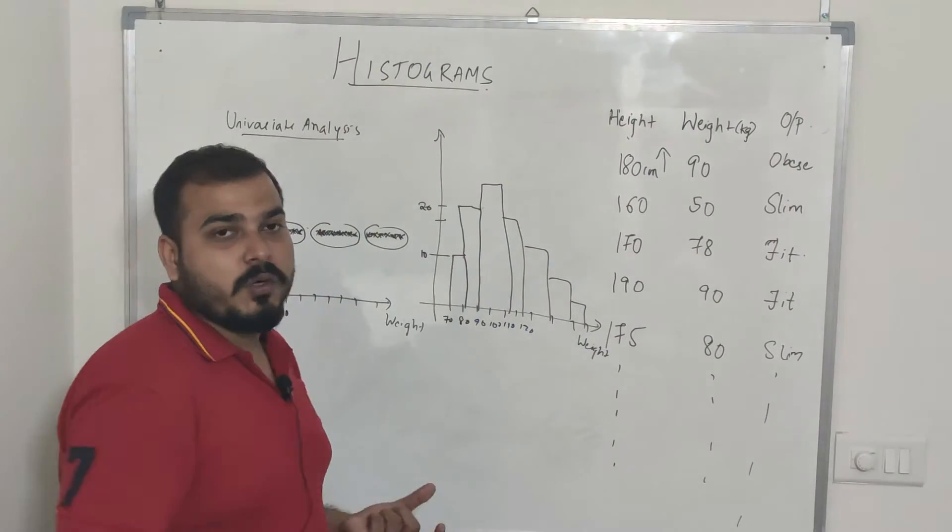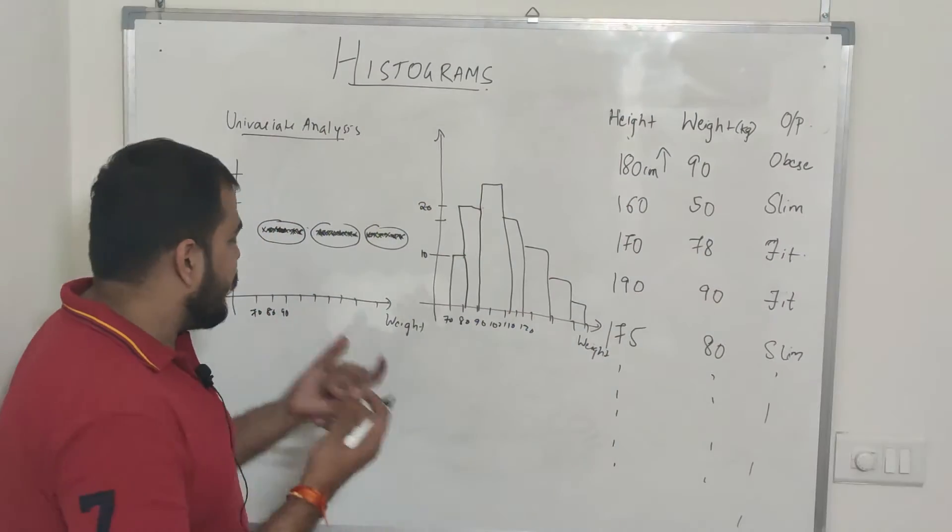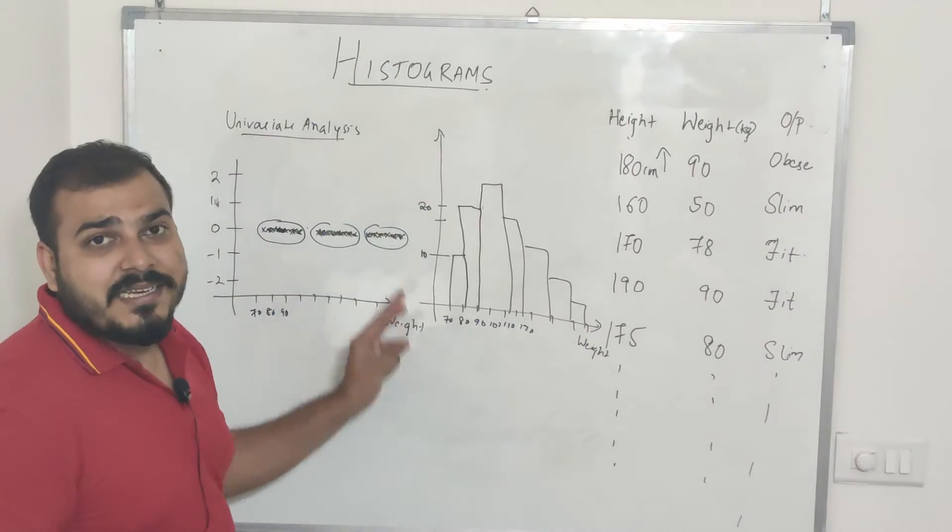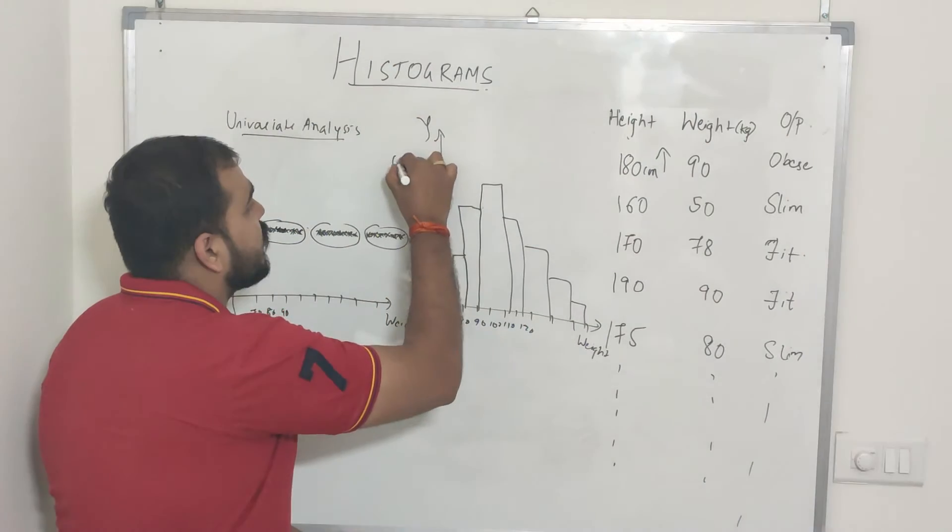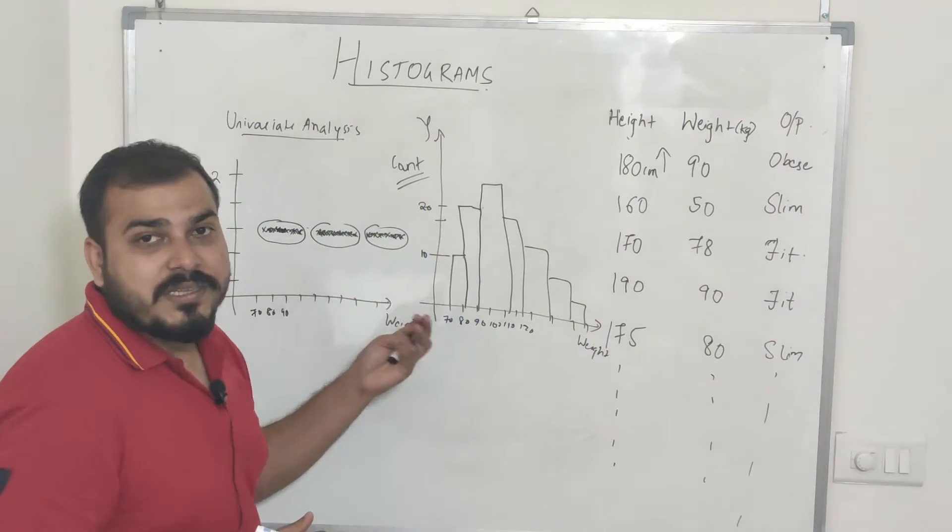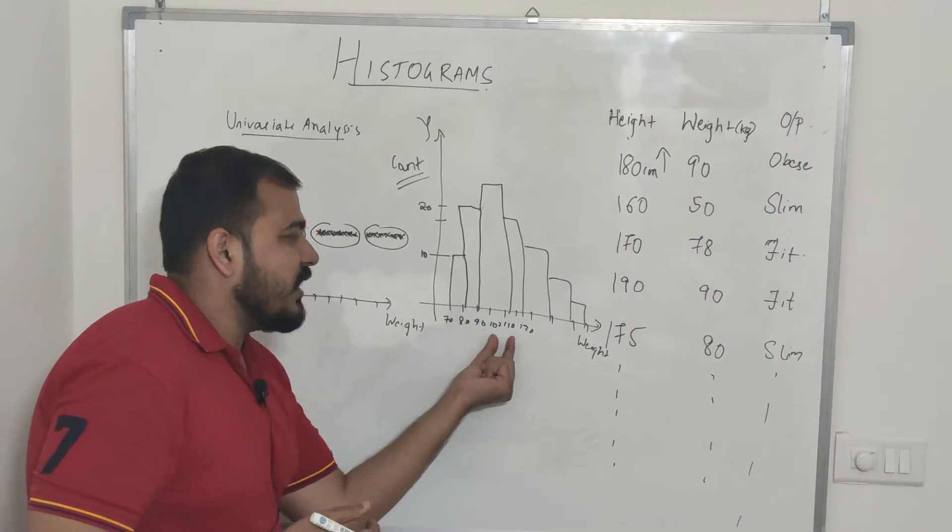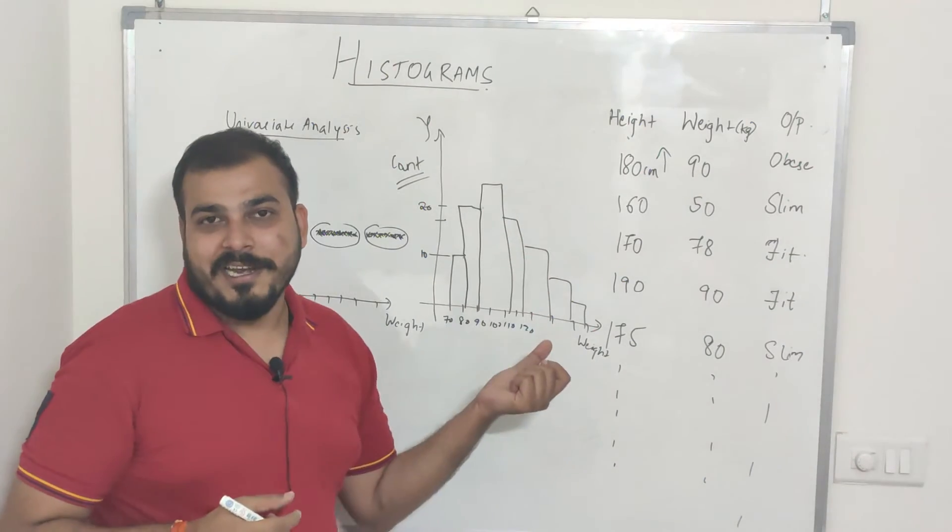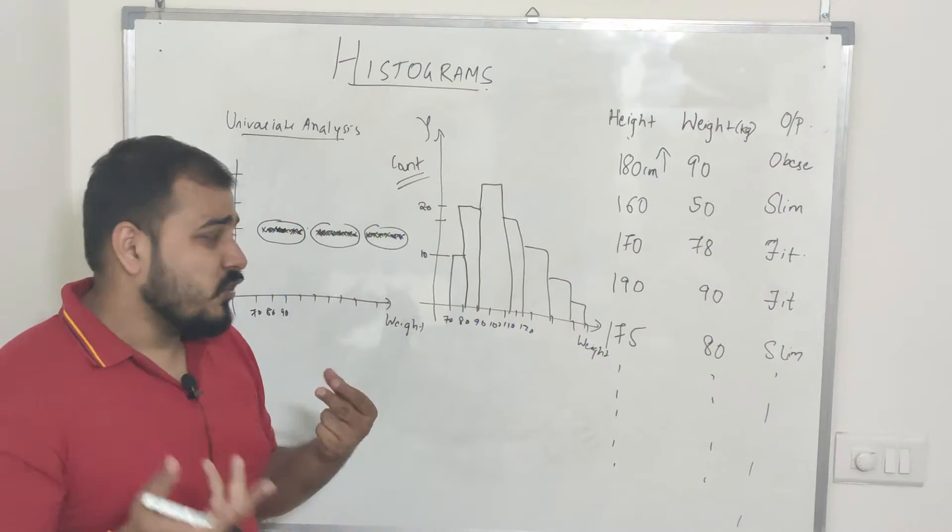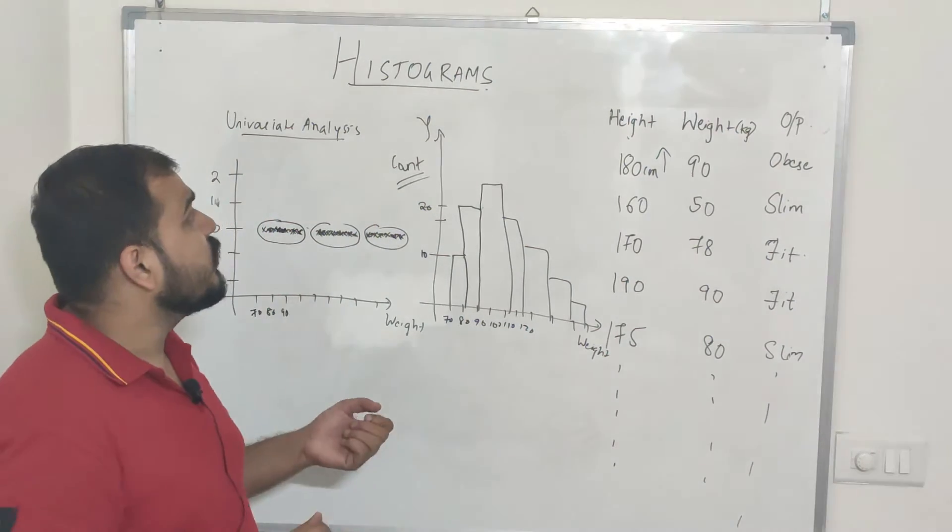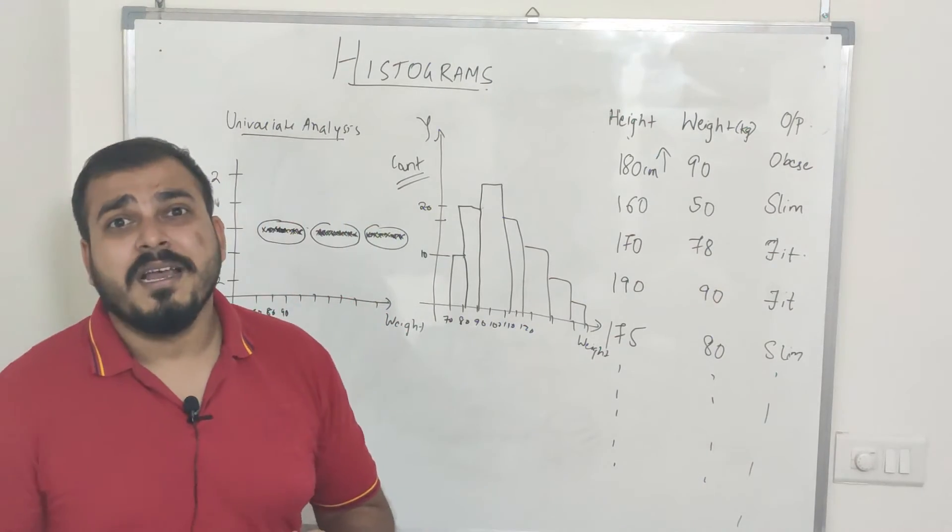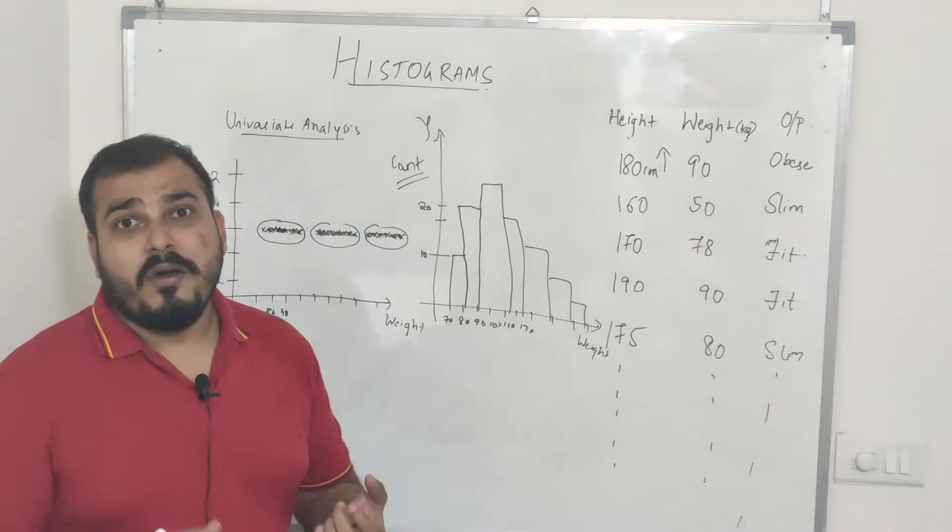That is what is basically histogram. A histogram helps us to find out how many points have been populated. The y-axis basically shows us the count of the number of values that are present within this range, and based on that this building is created. It is very easy to plot histogram. You can use matplotlib hist function or you can also use seaborn, there is again a histogram function where you can basically plot it.